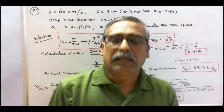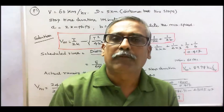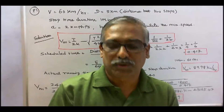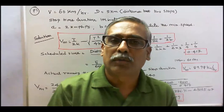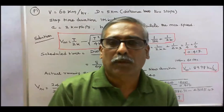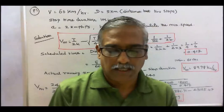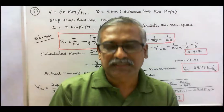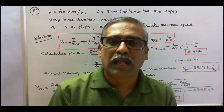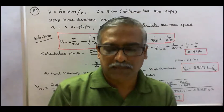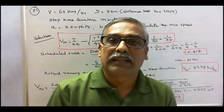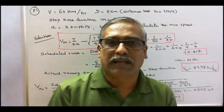Problem 1: A train has a speed of 50 km per hour between two stops 5 km apart. The duration of stop is 1 minute. The acceleration and retardation are 2 km/h/s and 3 km/h/s respectively. Calculate the maximum speed of the train.